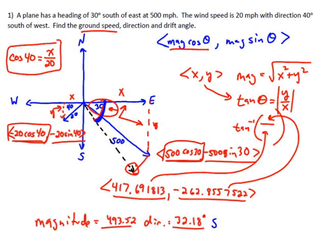If you want the drift angle, the drift angle is just how much off course the plane went. The plane was originally going 30 degrees south of east, now going 32.18. The difference between 32 and 30 is just the 2.18 degrees that the plane drifts off course.